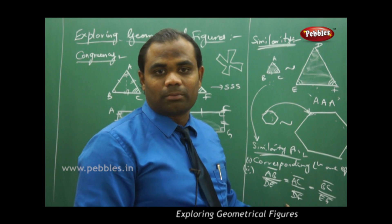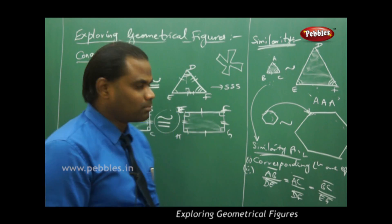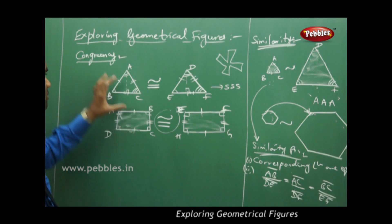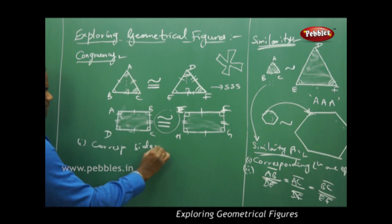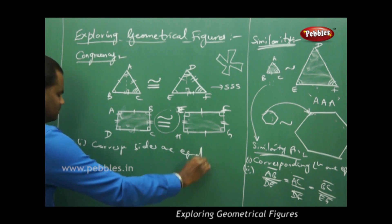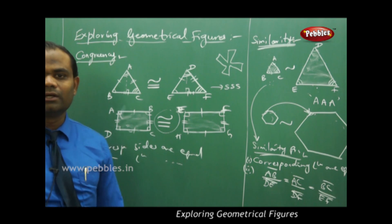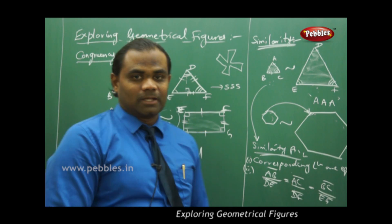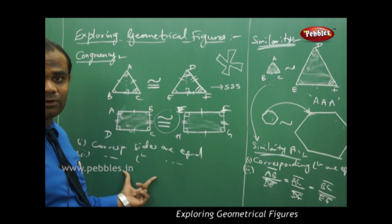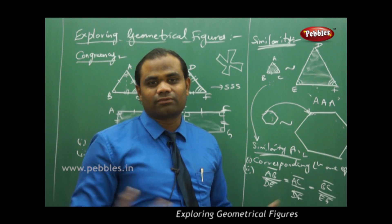So these are the two testing properties for similarity. For congruency, the testing properties are: the lengths of corresponding sides must be exactly equal, and corresponding angles must also be equal. These are the two basic properties checked for congruency, and the two properties of equal corresponding angles and proportional sides are checked for similarity of any two geometrical figures.